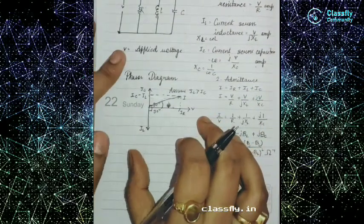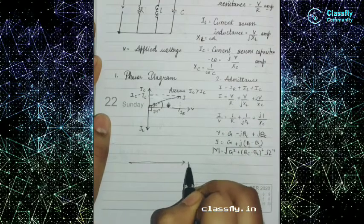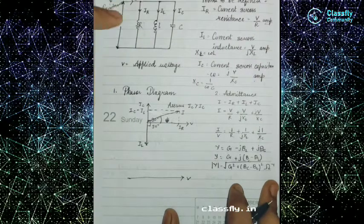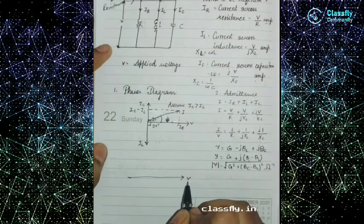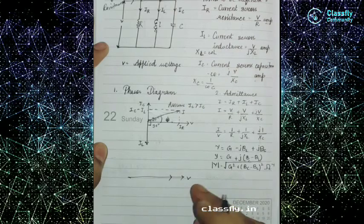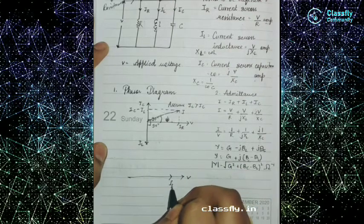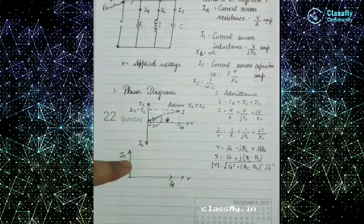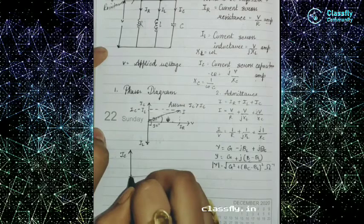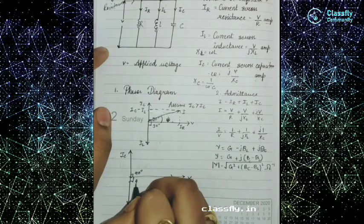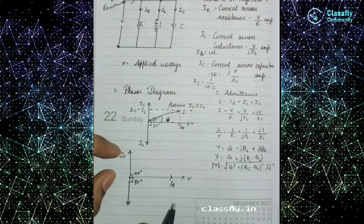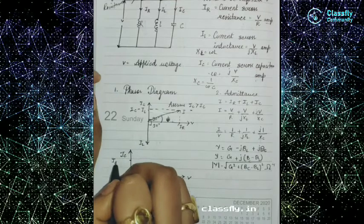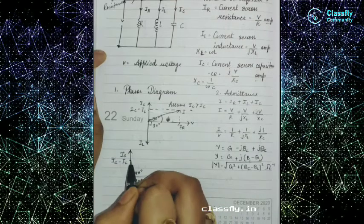Now let's see the phasor diagram. First we draw a reference line based on V, because in a parallel circuit the voltage is the same for everyone. IR will be in the same line as V since current and voltage have no angle difference in a resistor. IC leads by 90 degrees and IL lags by 90 degrees. We assume IC is greater than IL.